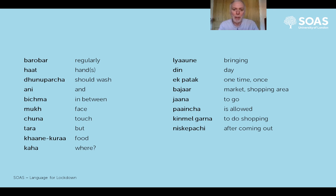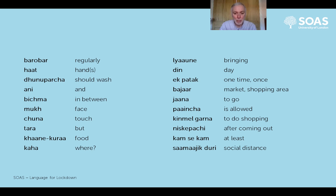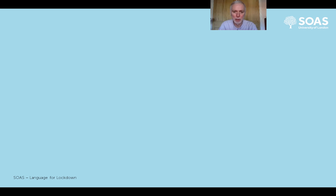'Niske pati' - 'niskanu' is the verb meaning to emerge from somewhere, to come out of somewhere, and 'pati' means 'after'. That's a little advanced for today's purposes - just think of it as a phrase meaning 'after coming out'. 'Kam se kam' is a phrase meaning 'at least', probably borrowed from Hindi. 'Samajig dhuri' - we're all familiar with this concept now. This has been translated into Nepali from the English phrase - so 'samajig dhuri' literally means 'social distance': 'samajig' is the adjective 'social', and 'dhuri' is 'distance'.